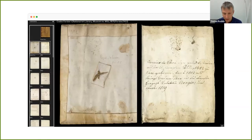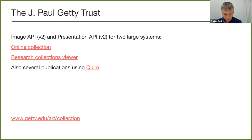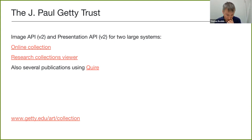The V&A also uses Universal Viewer for all their paginated material, such as source notebooks. Moving on to the John Paul Getty Trust, they support IIIF extremely extensively — both Image and Presentation APIs — using their online collection viewer, their research collections viewer, and a custom publication system they developed and maintain called Quire.